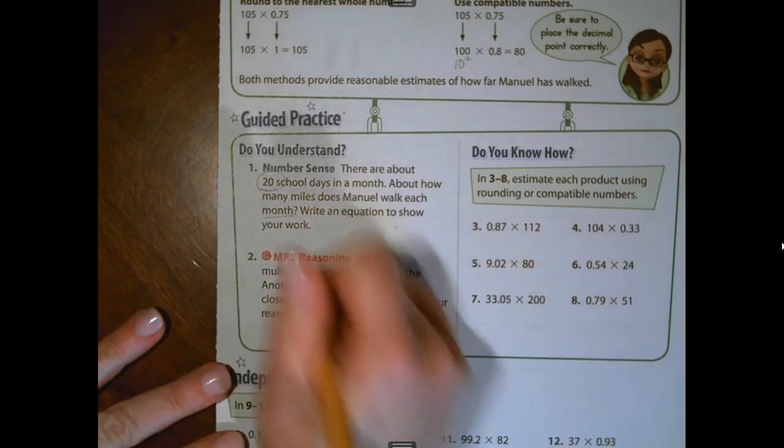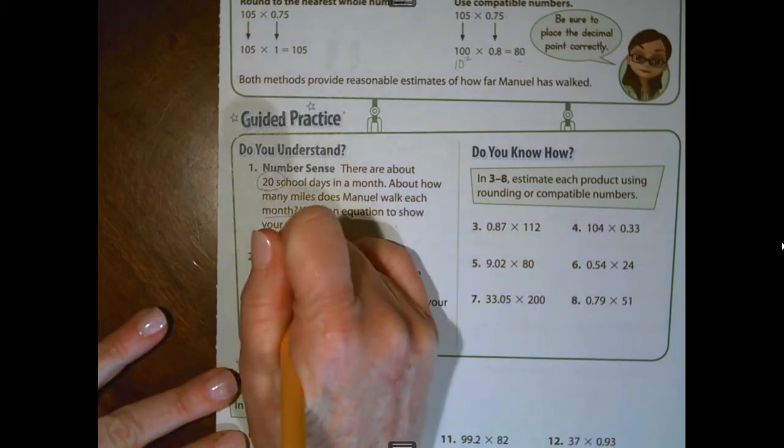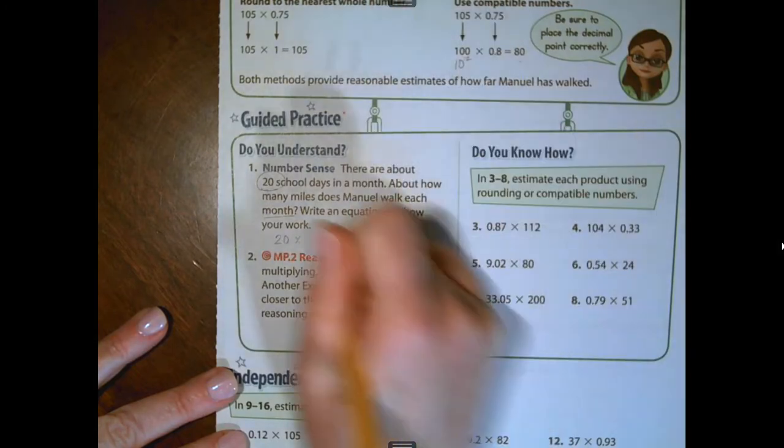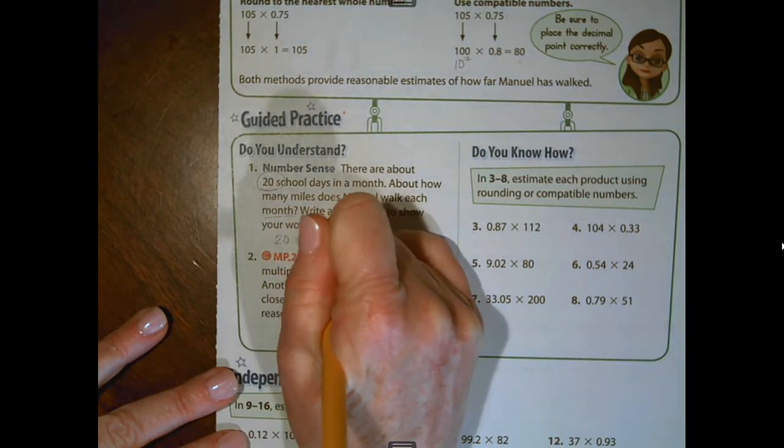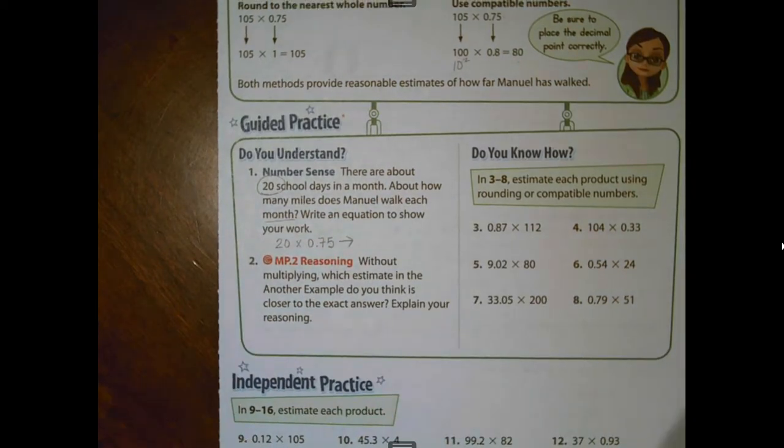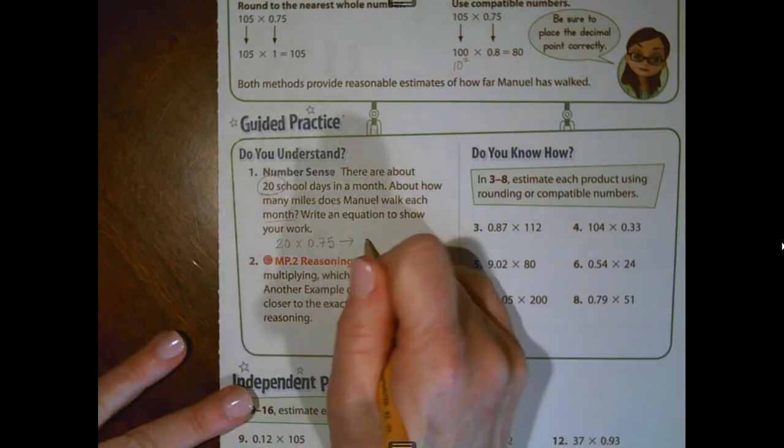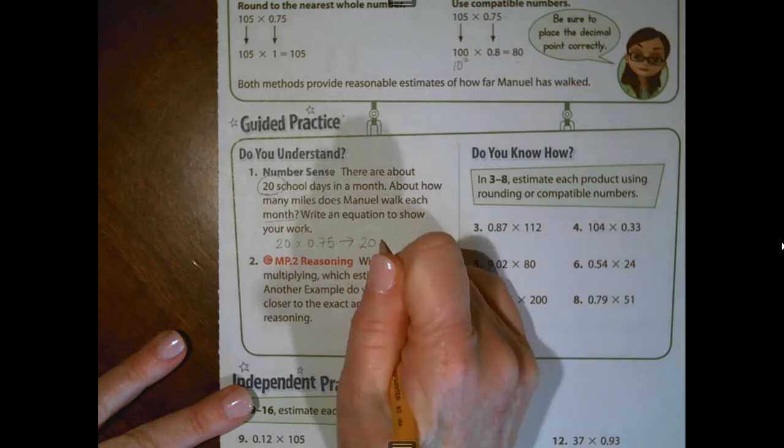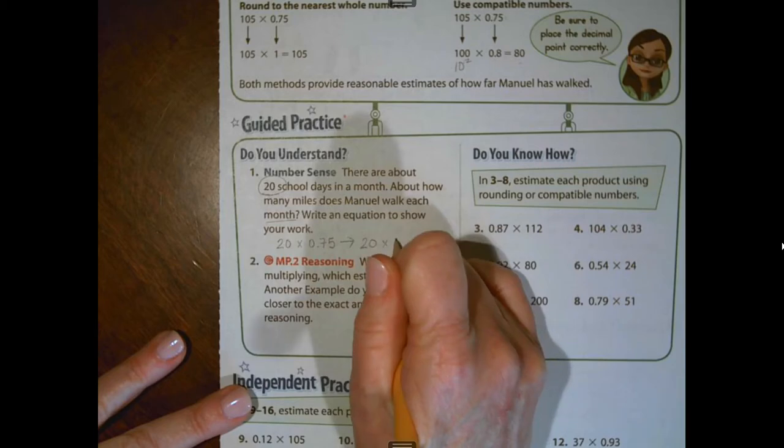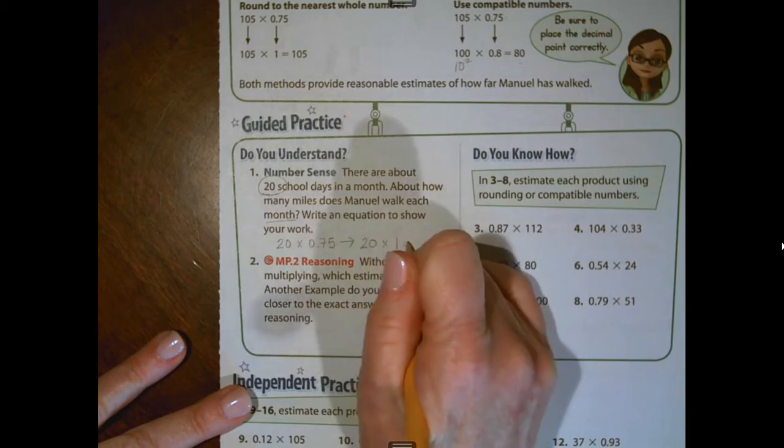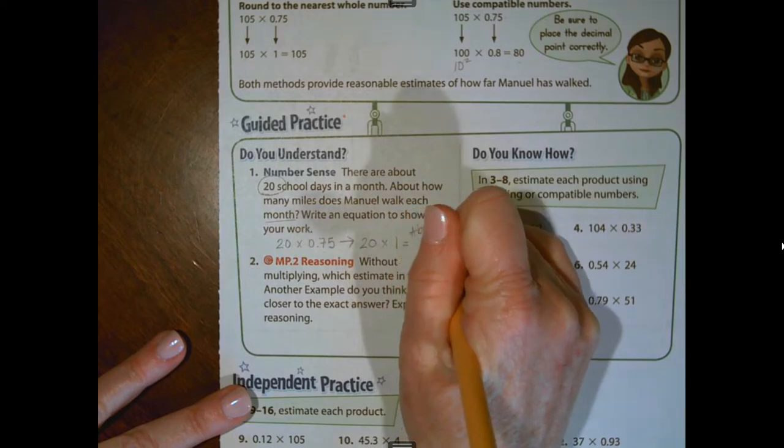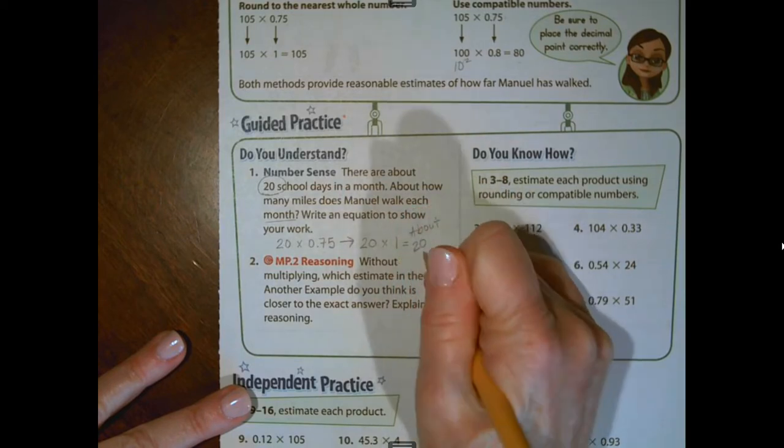So there are about 20 days in a month. Manuel walks 75 hundredths of a mile to and from school. So I'm thinking the method of estimation I'm going to use here is I'm going to multiply 20 times one. I'm going to round this decimal to the nearest whole number. So I'm going to get an estimate of about 20 miles.